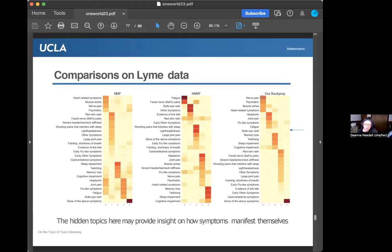You can see the first topic corresponds to these four symptoms at the top: nerve pain, psychiatric issues, muscle aches, theta symptoms. The second topic here, and so on. A couple of interesting things that when we presented this to the board, which consists of physicians who treat Lyme and study Lyme clinically, they noticed one thing once we explained what we were looking at.